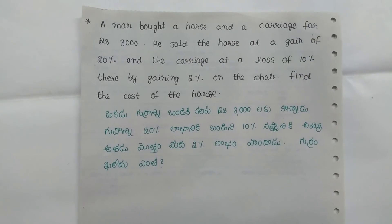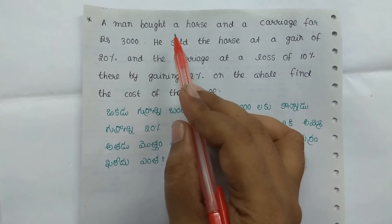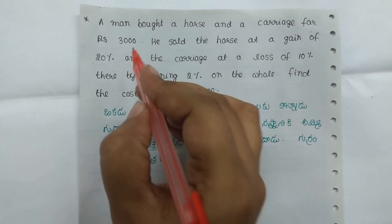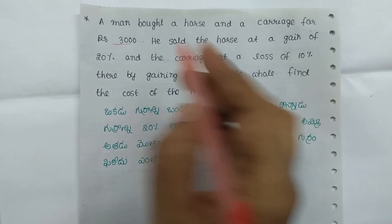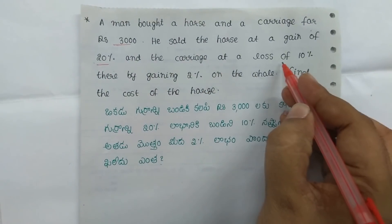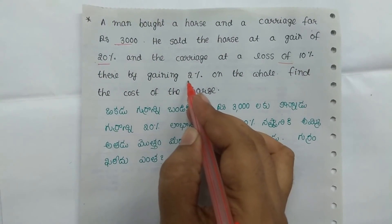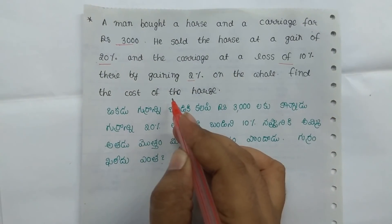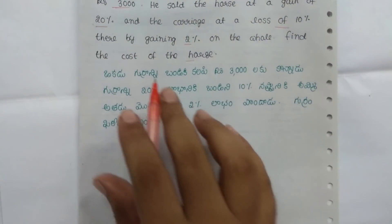This man bought a horse and a carriage for Rs. 3000. He sold the horse at a gain of 20% and the carriage at a loss of 10%, thereby gaining 2% on the whole transaction. Find the cost price of the horse.